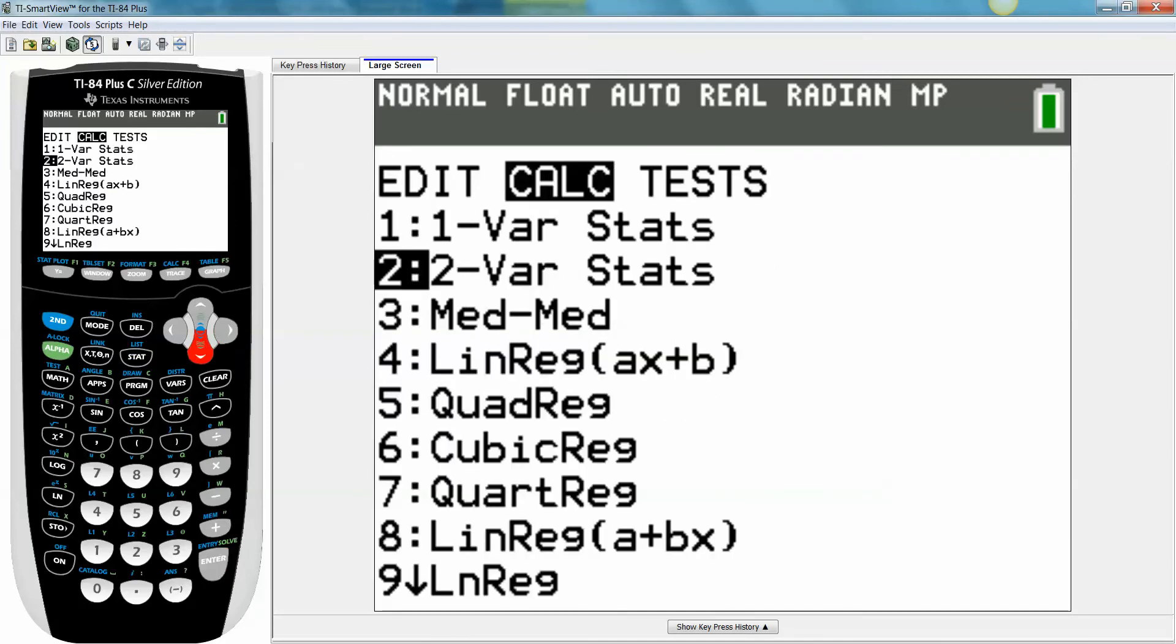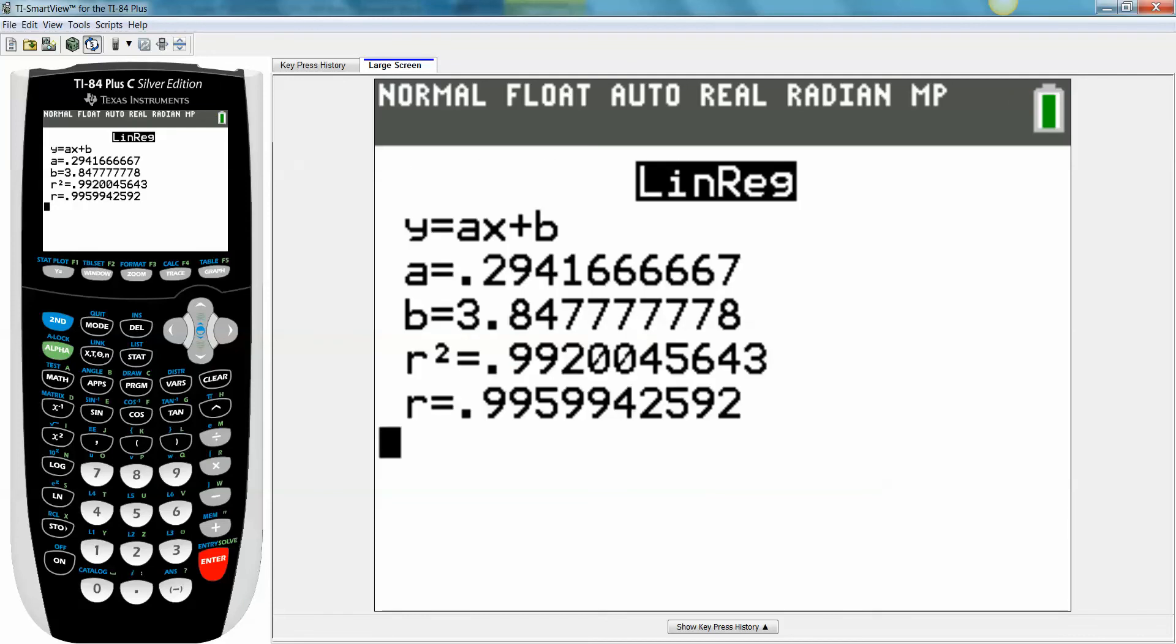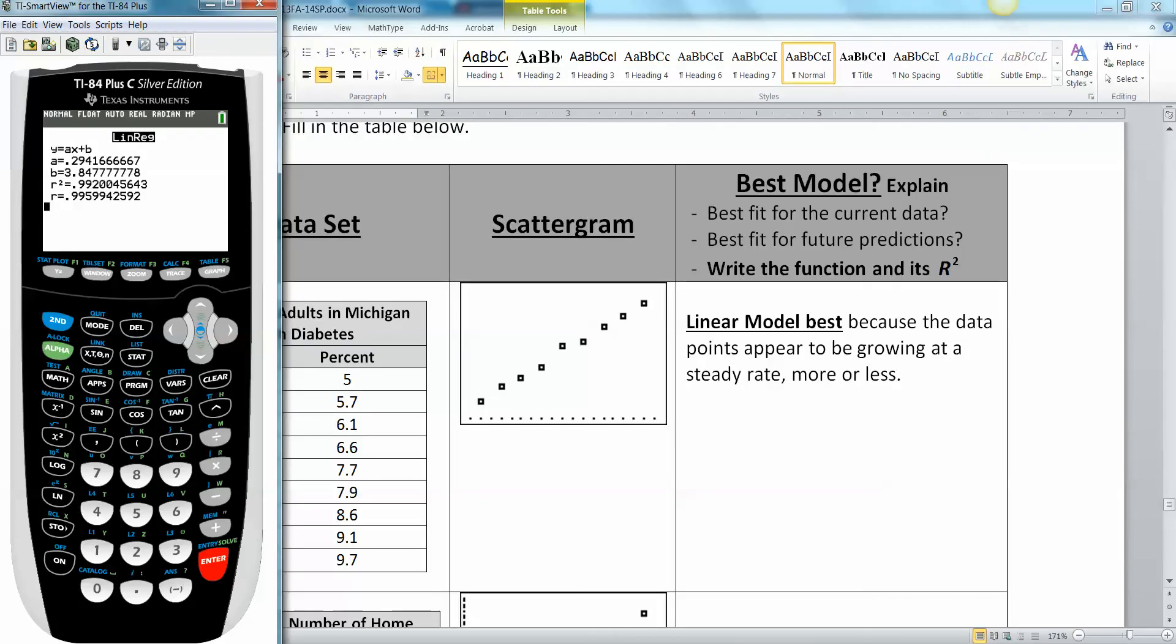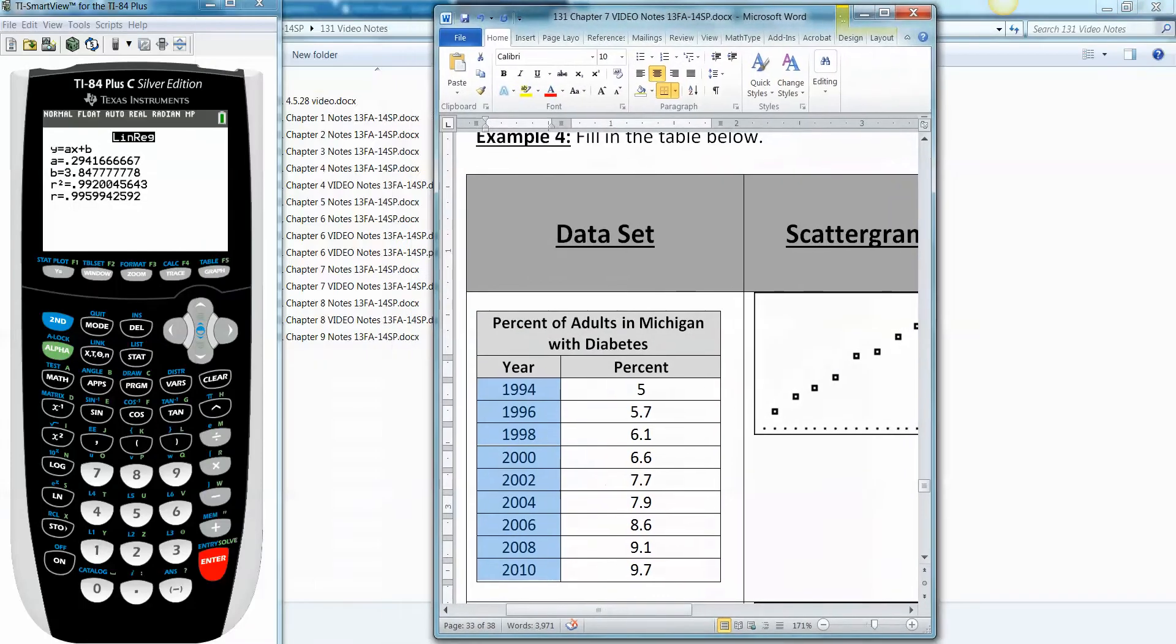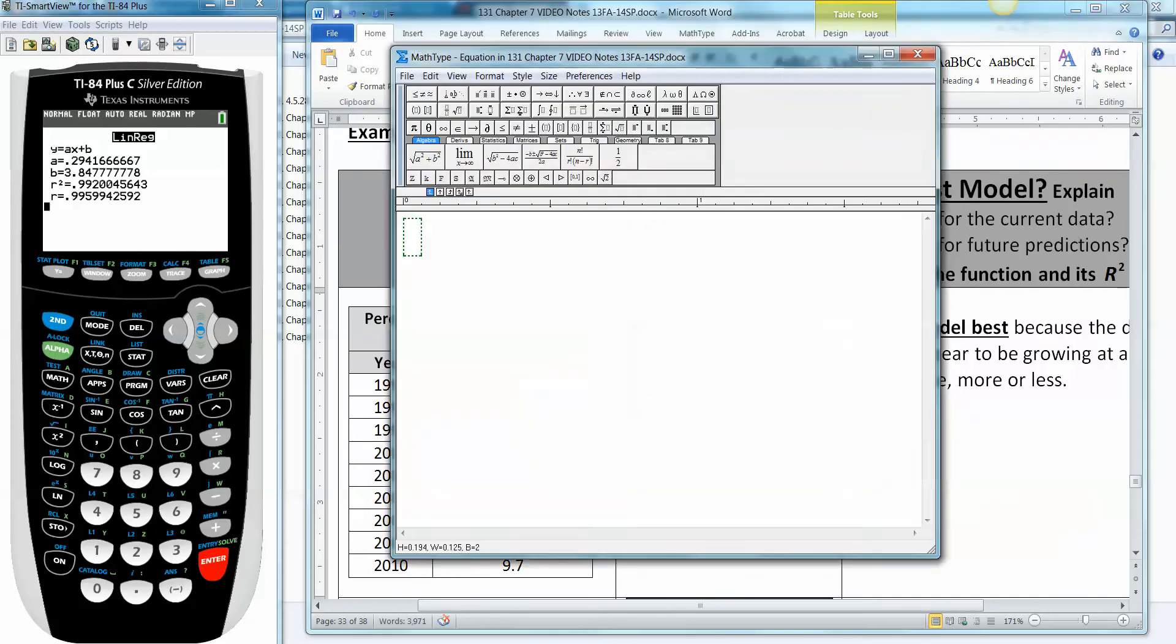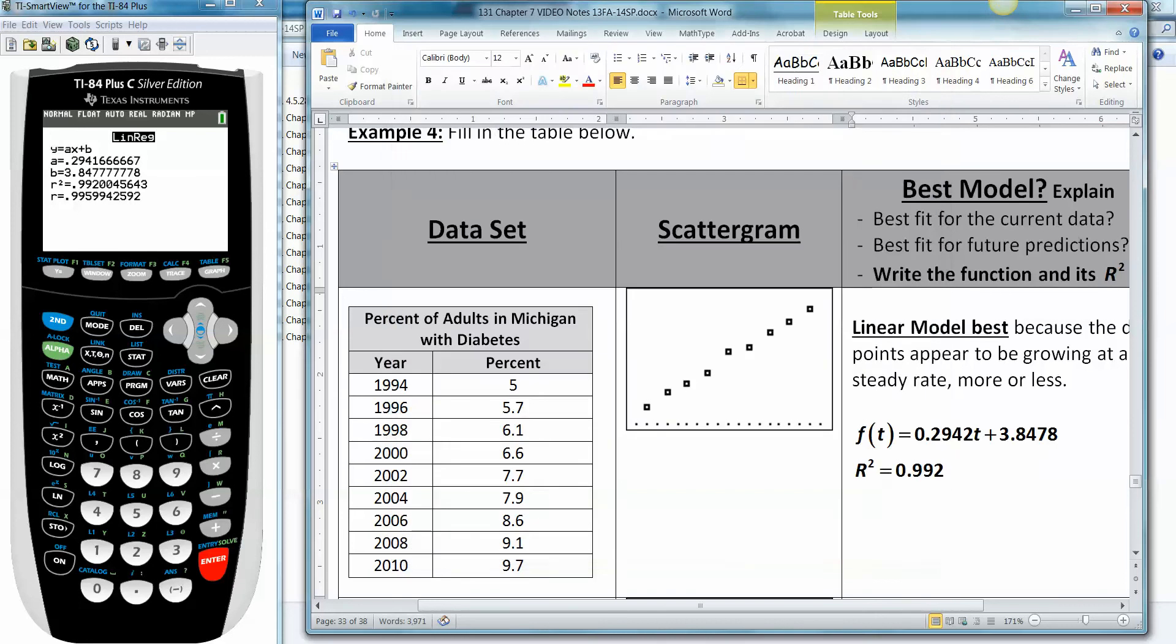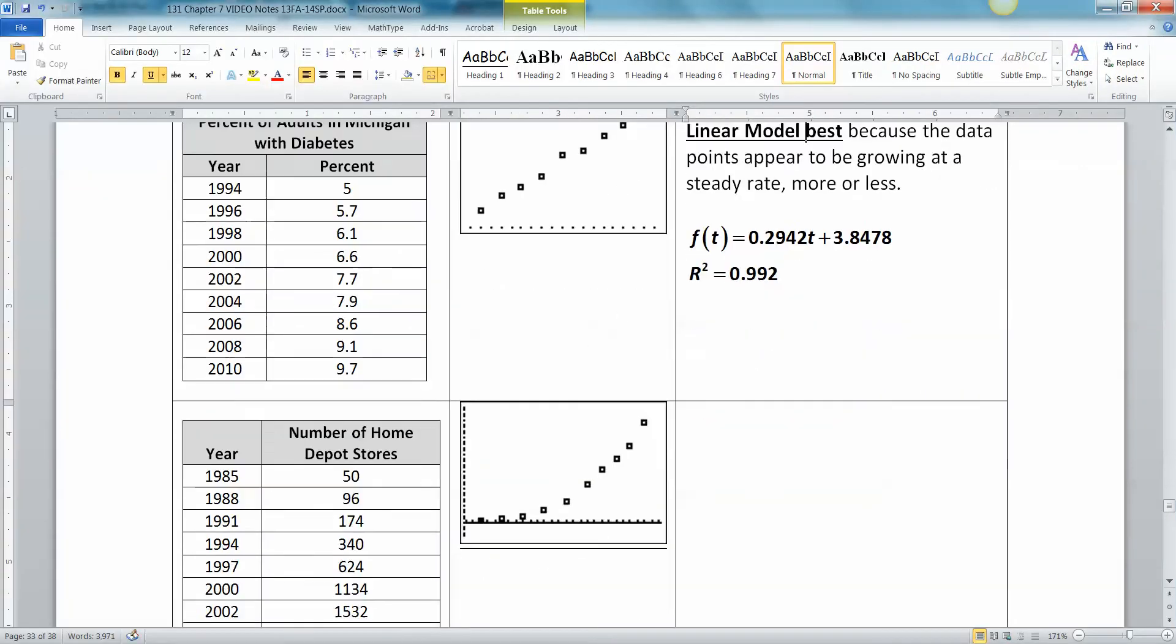And then I go over here, 5, 5.7 and so on. Now we've got our data in there and we said linear is best. So stat, calc, number four, linear regression, go down to the bottom, calculate it. There it is. Our regression equation is F of t equals 0.2942t plus 3.8478, and our R squared value is 0.992. That's how to find linear regression and how to find the R squared to go with it.